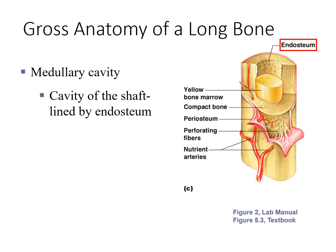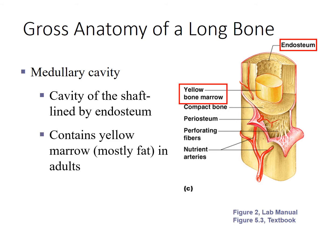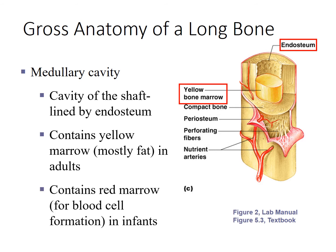In an adult, that medullary cavity would be filled with yellow marrow, and yellow marrow is mainly fat. If you have ever cooked soup, the way you make broth is you take a soup bone and boil it in water, which liquefies this fat — and that, in essence, is the broth. It's what gives your soup flavor.